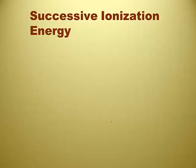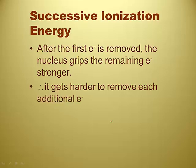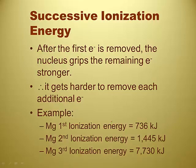With successive ionization energies, we're talking about the same atom — just before we were talking about the first electron, now we're talking about taking away the second or third electron. After the first electron is removed, the nucleus grips the remaining electrons stronger because it doesn't have as many to pull in, so it can pull them in even tighter. Therefore it gets harder to remove each one because they're closer, so each successive ionization energy will be a larger number.